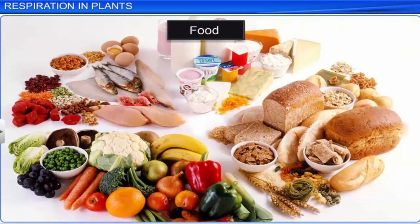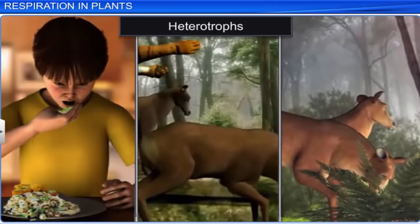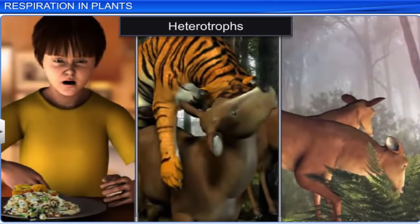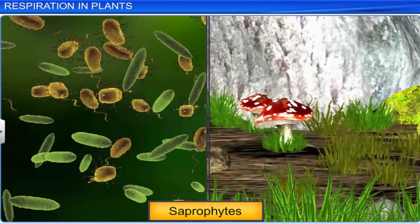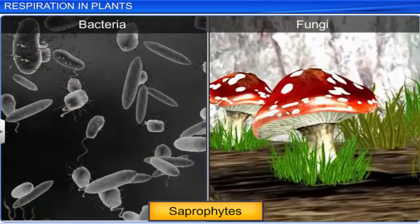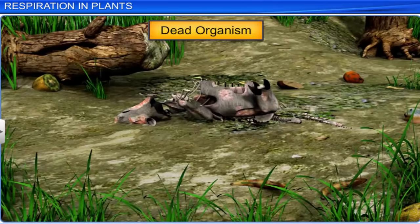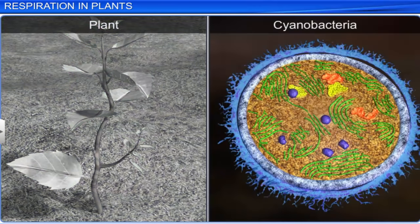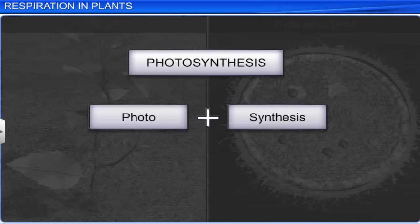Next to respiration, the requirement of food becomes an important thing for survival. Humans and animals are heterotrophs, in the sense that they obtain food from plants and other animals. Saprophytes like bacteria and some fungi feed on dead organisms.